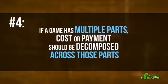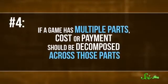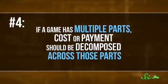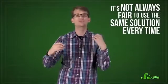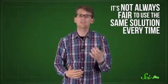The fourth axiom says that if a game has multiple parts, cost or payment should be decomposed across those parts. This means that, for example, if you did a lot of work for the group on Monday but you slacked off on Tuesday, your rewards on each day should be different. Or if you ordered a salad one night but a steak the next, you probably should pay more on the second night. In other words, it's not always fair to use the same solution every time — the numbers should be reviewed regularly so that the coalition can make adjustments.